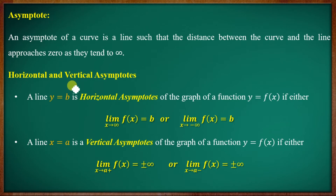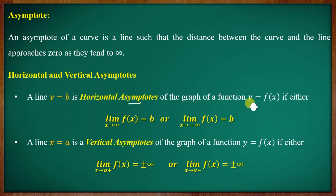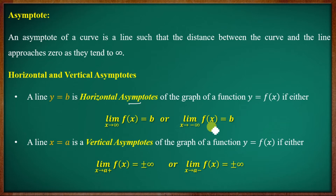An asymptote of a function can be horizontal or vertical. The line y equal to b is the horizontal asymptote of the graph of a function y equal to f(x) if either the limit as x tends to infinity of f(x) equals b, or the limit as x tends to minus infinity of f(x) equals b.